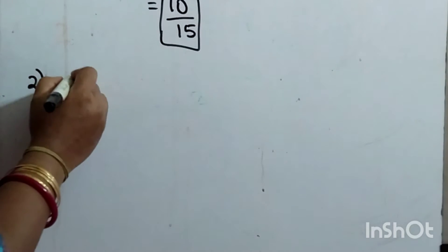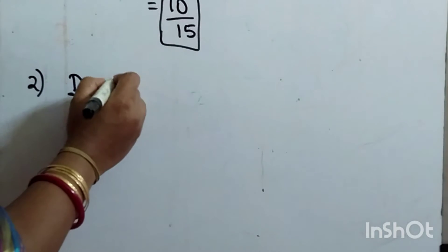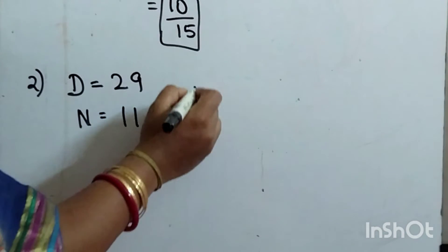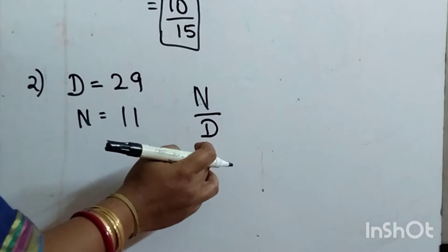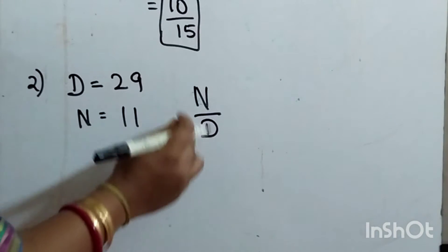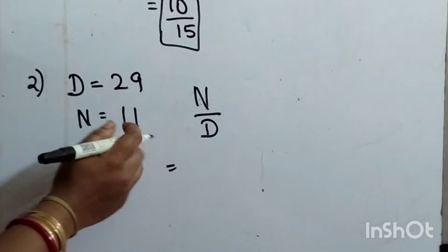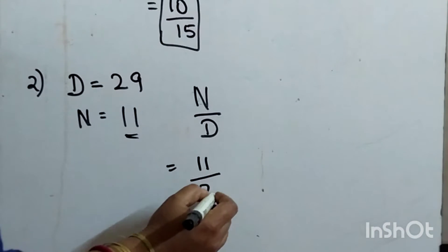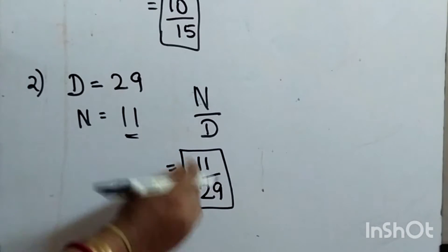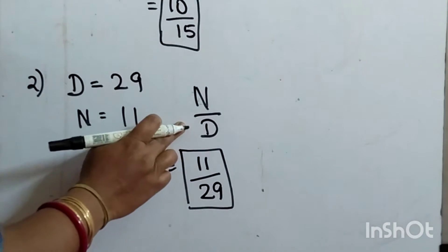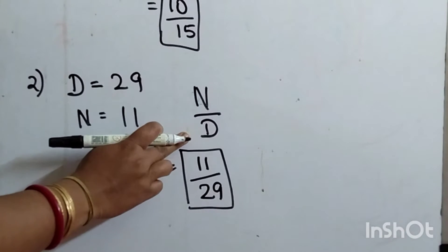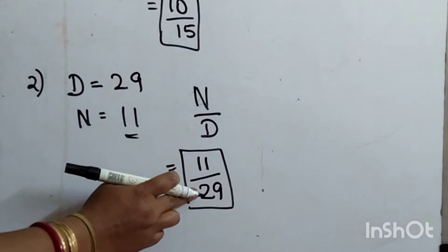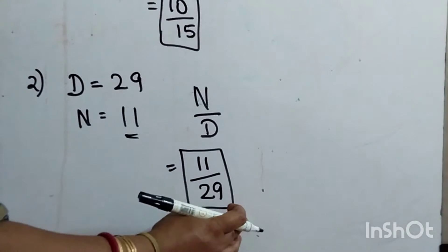Let's see one more example. Denominator equals 29 and numerator equals 11. We know numerator always comes at the top and denominator at the bottom. So numerator is 11 and denominator is 29. Therefore, in the standard form N by D, the fraction is 11 by 29.